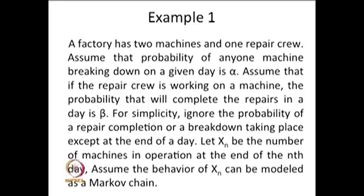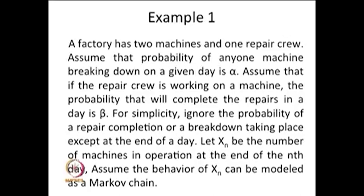The random variable X_N denotes how many machines are in operation at the end of the day. Therefore, the possible values of X_N — since we have two machines — will be 0, 1, or 2, forming the state space S = {0, 1, 2}. X_N over n forms a discrete time Markov chain because it is a discrete-time, discrete-state stochastic process. The number of machines working on any day depends only on how many were working the previous day, not all earlier days. Therefore, the memoryless property is satisfied, and this is called a discrete time Markov chain.